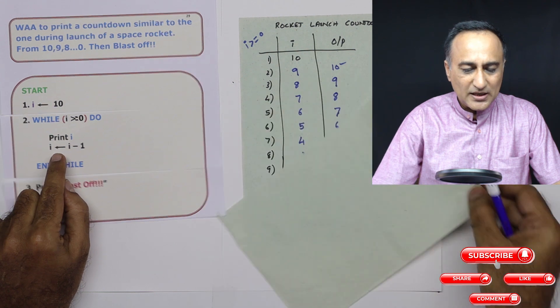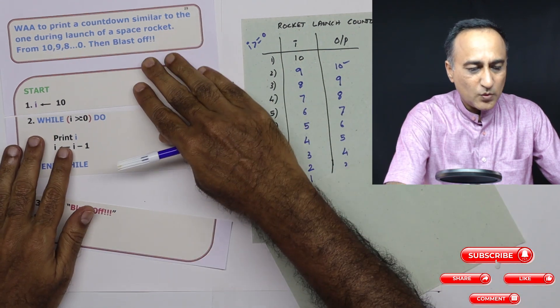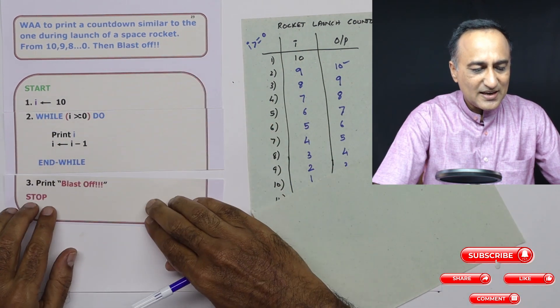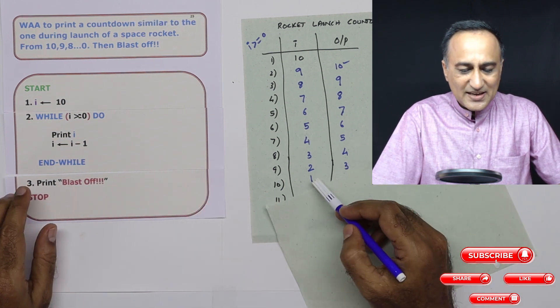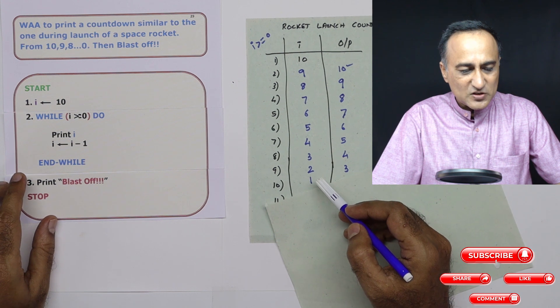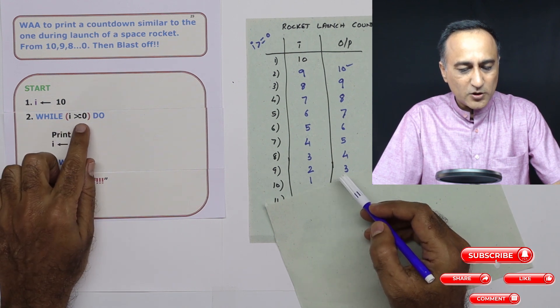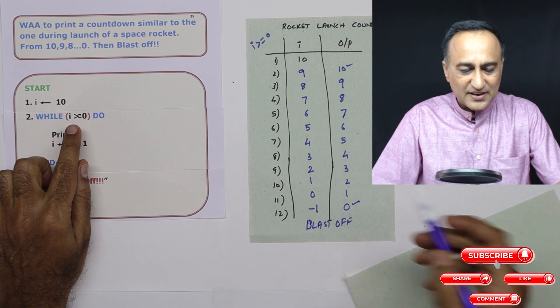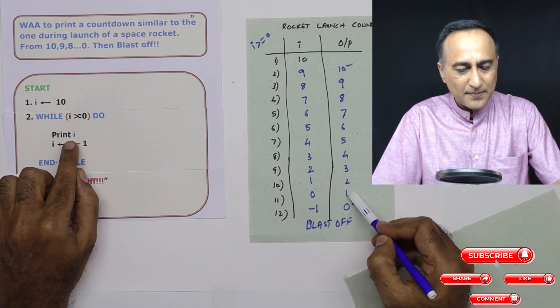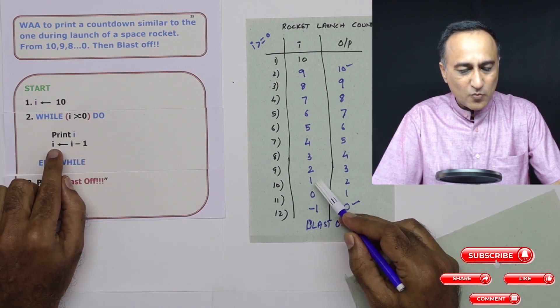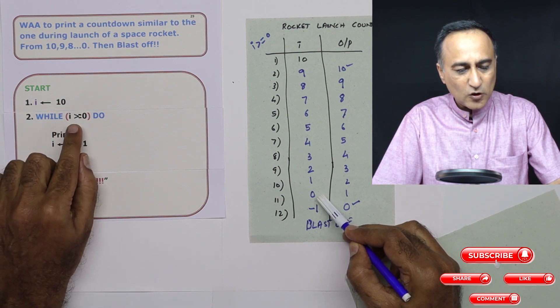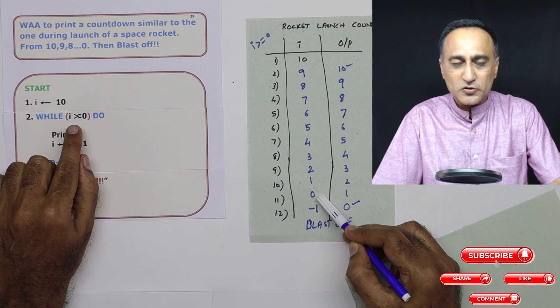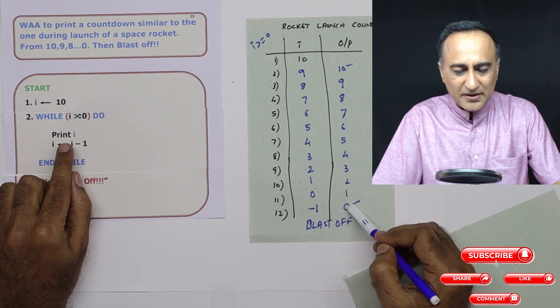This process will keep continuing till the value of I reaches one. So when I is one, one is greater than or equal to zero. So it is going to print one, then I from one is reduced by one, it becomes zero. Zero is still not greater, but it is still equal to zero, so we are fine. So it is going to print zero.